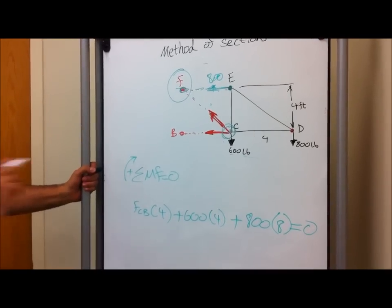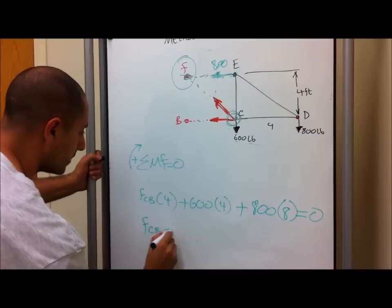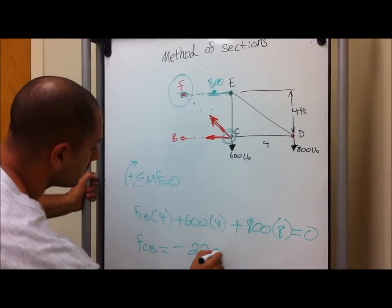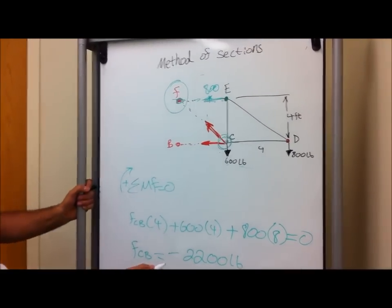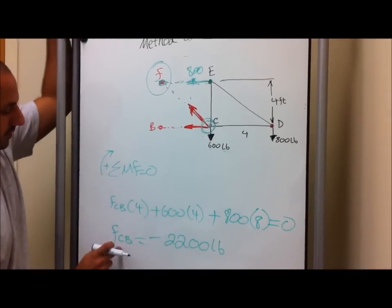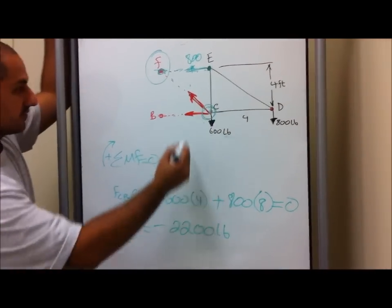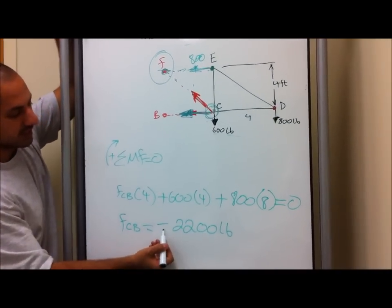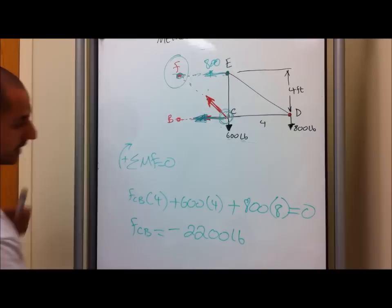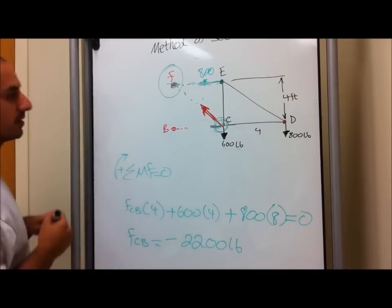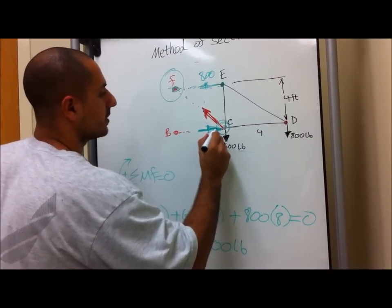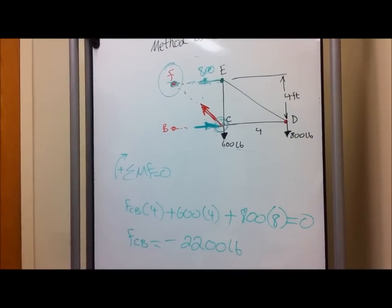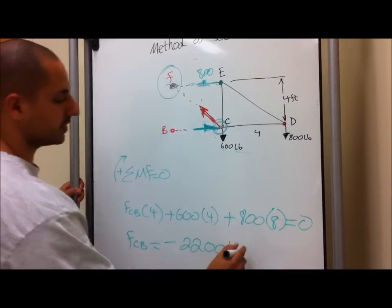And just by doing that, you will find out that F of CB equals negative 2200 pounds. Now, as I always said to you guys, according to our reference, we said that the force F of CB, according to our reference, saying that it's going into the left direction. But since we've got a negative, that tells us that this force is actually not going to the left, but it's going to the right. And since we changed the direction and it's pointing to that point, it is considered compression. So the force of F of CB comes out to be compression.